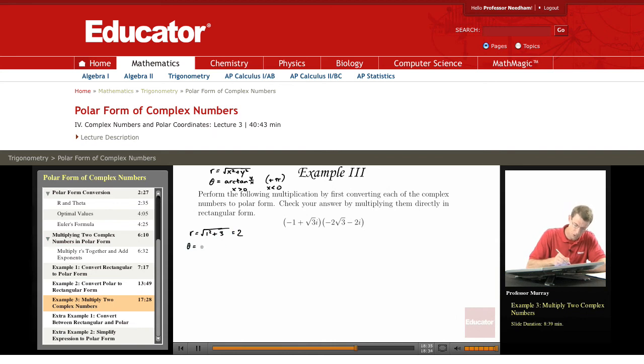Theta is equal to arctan of negative root 3 over 1. Let me write that as root 3 over negative 1. Now I have to add on a pi because the x is negative. Arctan of negative root 3 is negative pi over 3 plus pi. That was a common value I remembered. Plus pi gives me 2pi over 3.